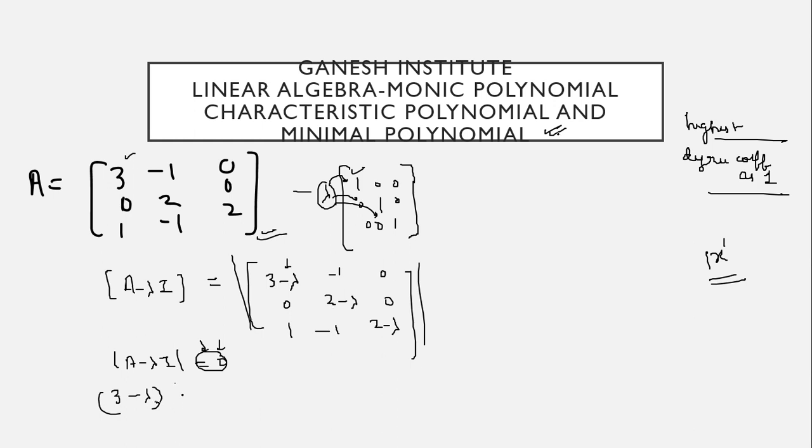So 3 minus lambda will get multiplied with 2 minus lambda square and 0, right? So what I'm doing, I'm hiding this first row and first column where 3 minus lambda is lying, and take the determinant of the rest of the elements.